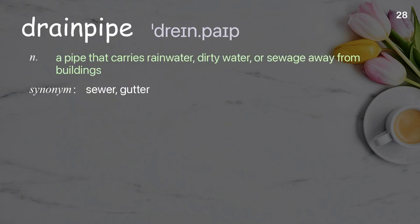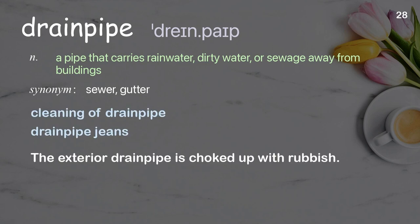Drainpipe: a pipe that carries rainwater, dirty water, or sewage away from buildings. Examples: cleaning of drainpipe, drainpipe jeans. The exterior drainpipe is choked up with rubbish.